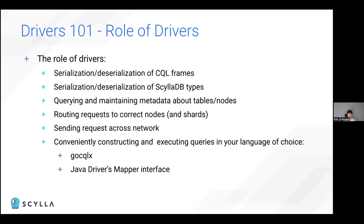The driver also maintains metadata about the cluster — what tables are available, what nodes are available. This information is crucial to send the query to a correct node, and in terms of ScyllaDB, also to the correct shard — the actual physical core containing this data. Of course, the driver actually sends the data over the network. Different drivers like the Go CQL driver and the Java driver have many helpers that allow you to conveniently construct queries.